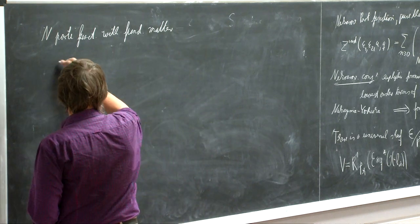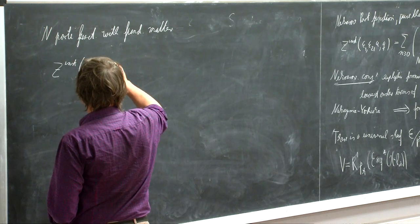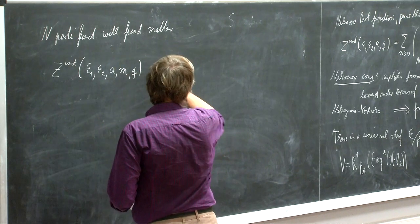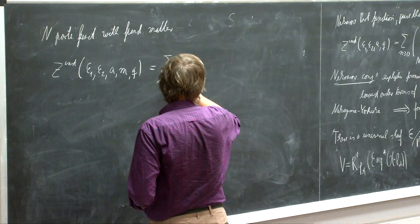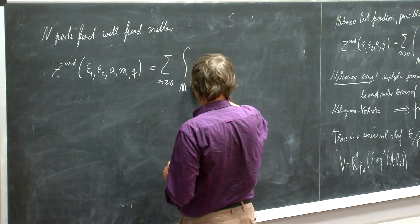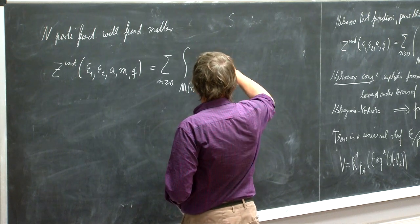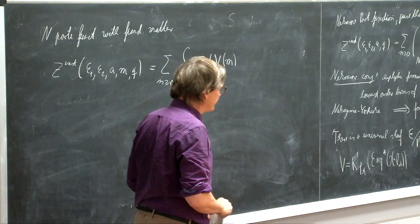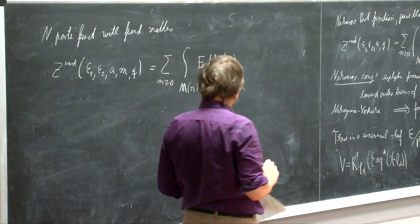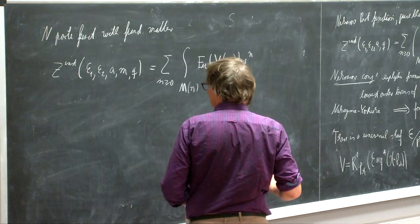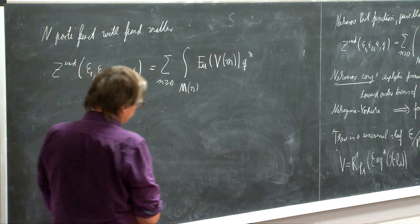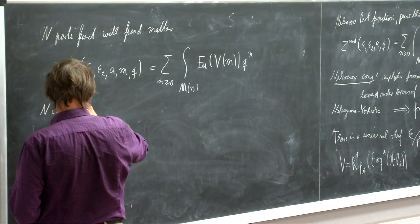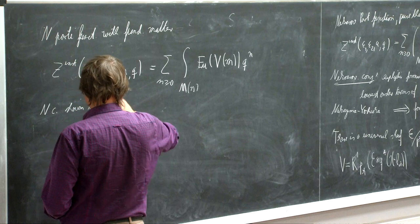The Nekrasov partition function with fundamental matter would be: it depends on epsilon_1, epsilon_2, A, some number M, Q. And here we take the sum, the integral over M(N), and we integrate over the Euler class of this tautological sheaf, twisted by some equivariant character M, times Q to the N. The Nekrasov conjecture for this has been also shown by Nakajima and Yoshioka.